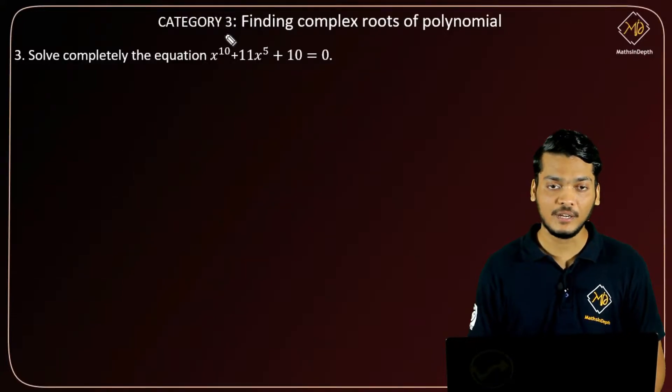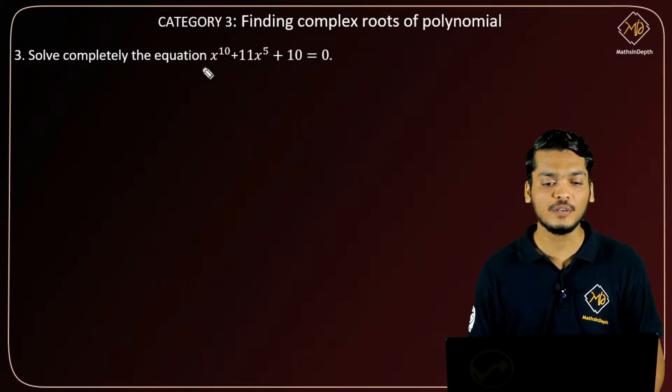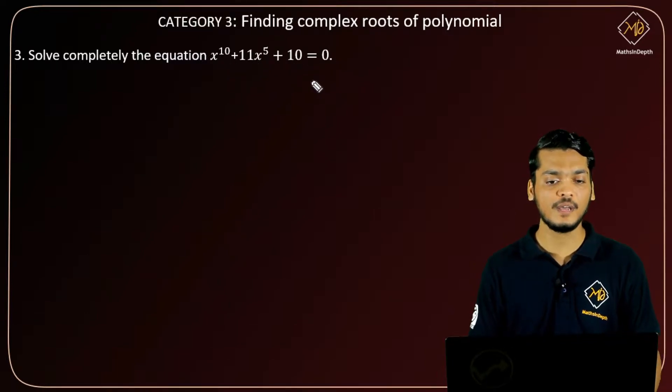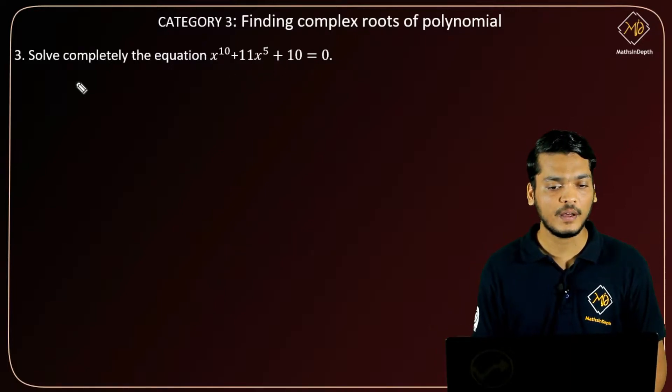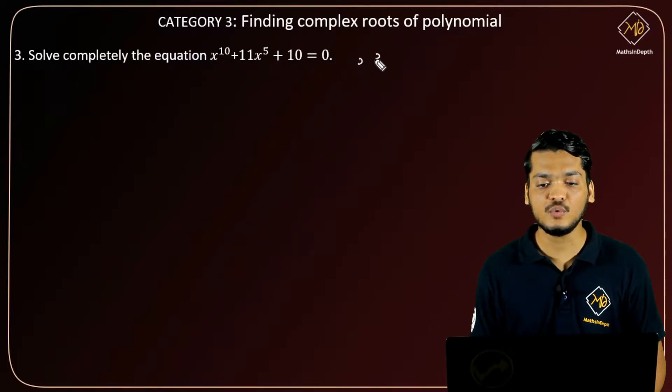In the third question of category 3, we have to solve the equation x^10 + 11x^5 + 10 = 0. So here we assume x^5